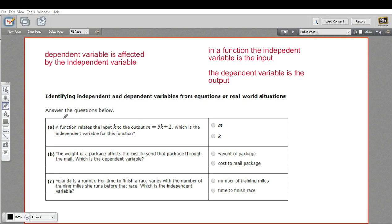So let's look at these. A says a function relates the input k to the output m equals 5k plus 2, which is the independent variable for this function. So m here is going to change based on what you put in for k. So if k is 1,